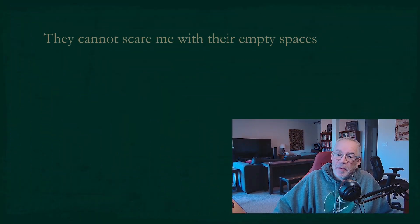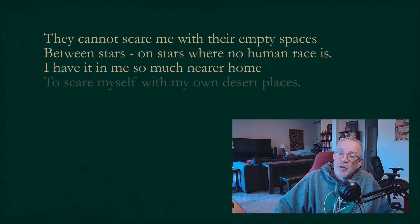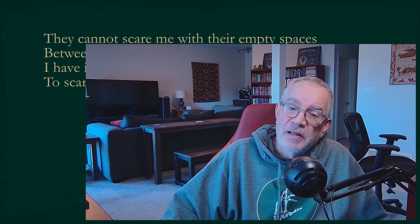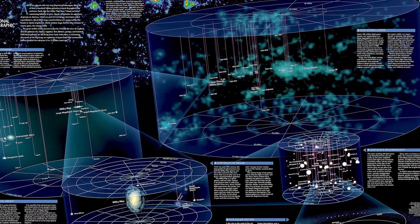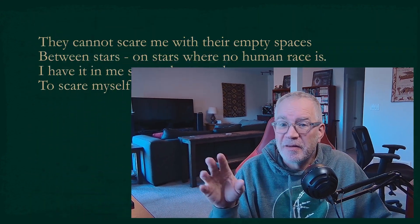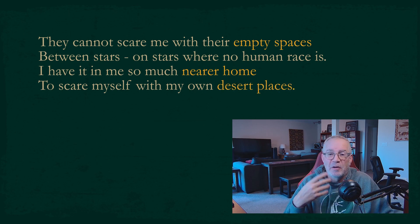The last stanza: They cannot scare me with their empty spaces, between stars on stars where no human race is. I have it in me so much nearer home to scare myself with my own desert places. Years back, a National Geographic map of the universe gave a glimpse of the immensity of it all — it kind of scared me. But the speaker isn't scared of the vastness of the universe, because the immensity of the emptiness inside him is so much closer. He calls these spaces within him desert places — vast and barren and empty. And now the title makes sense. That is Robert Frost's Desert Places.